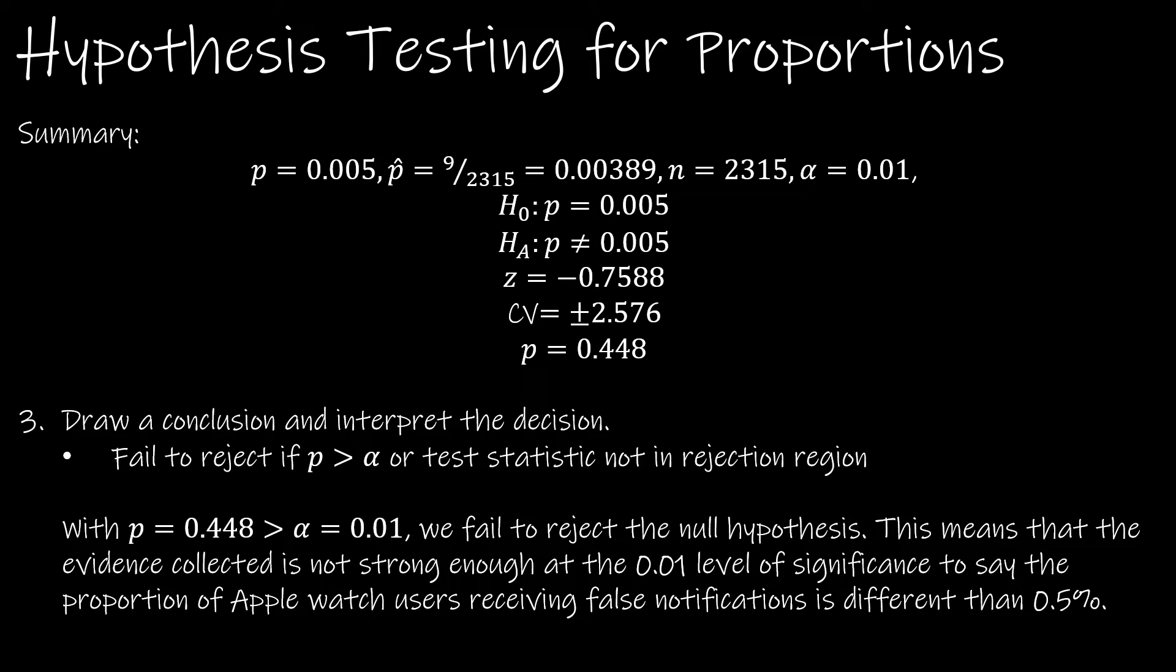So again, as we already said, we're going to fail to reject the null hypothesis based on our data, and you can either cite the p-value or you can talk about the rejection regions. This means that the evidence collected does not support the alternative. So there's not strong enough evidence at the 0.01 level of significance to say that the proportion of Apple Watch users receiving false notifications is different from 0.5%.